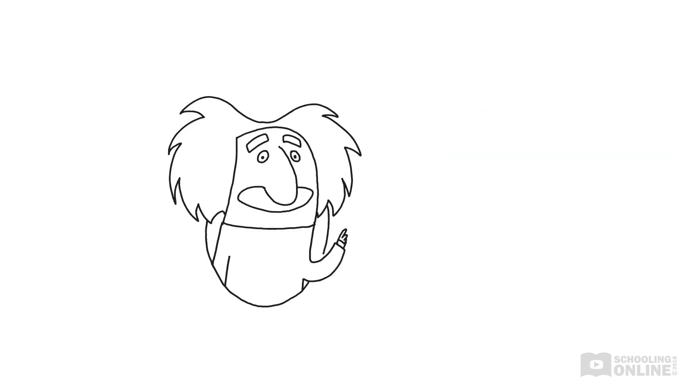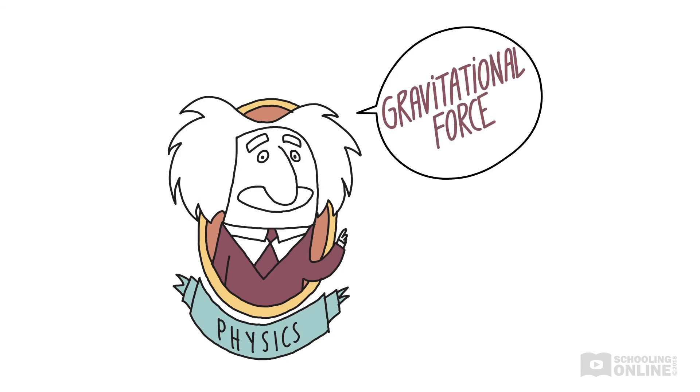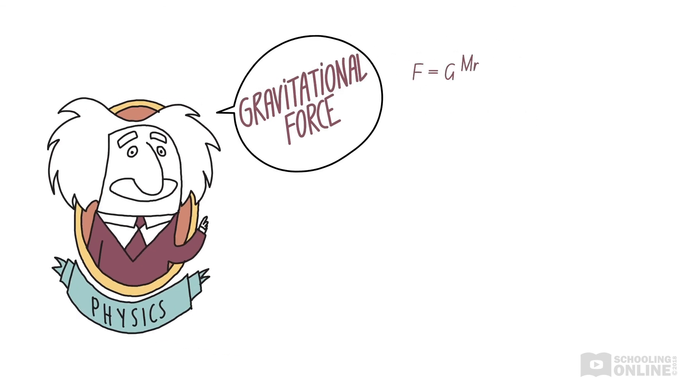To summarise, the gravitational force is a force between any two objects with mass, and can be calculated by the equation F equals G big M little m divided by r squared. This is given in the IB physics data booklet.